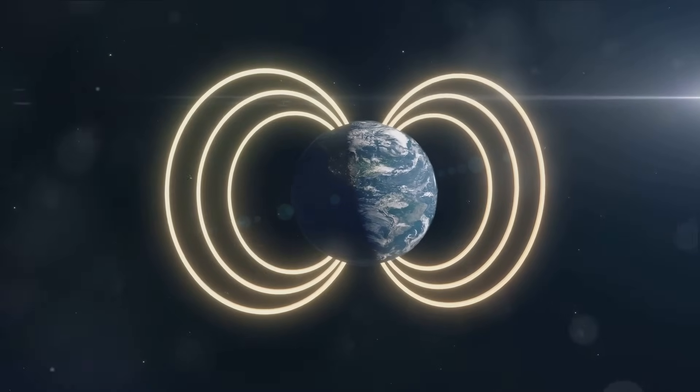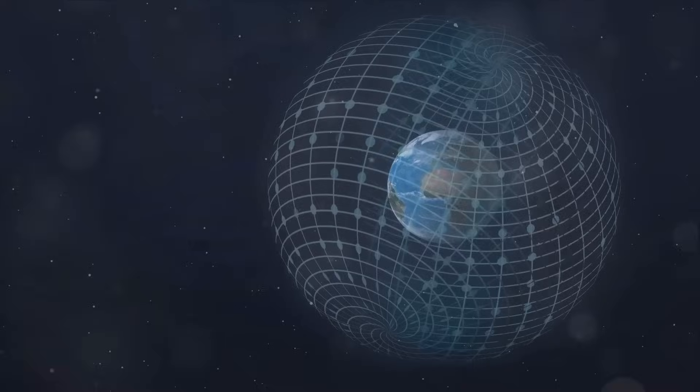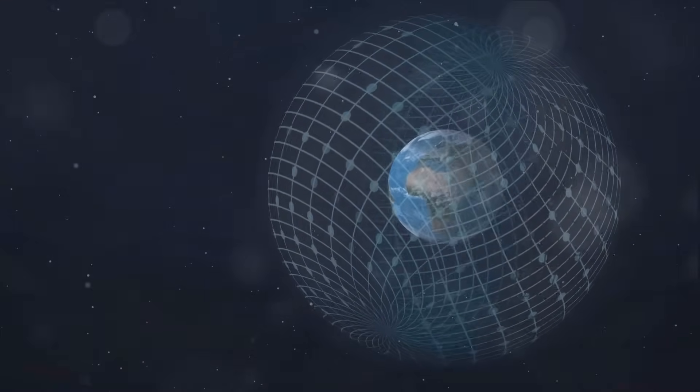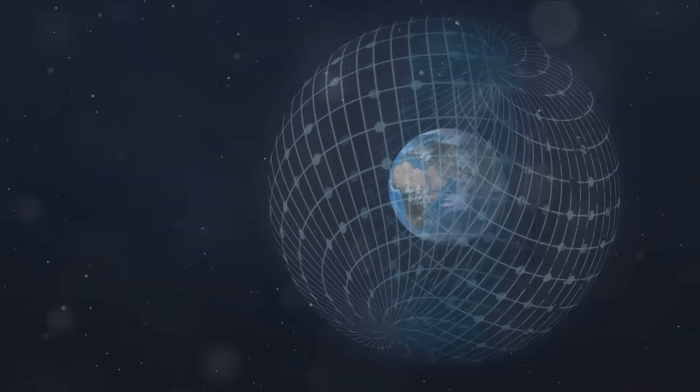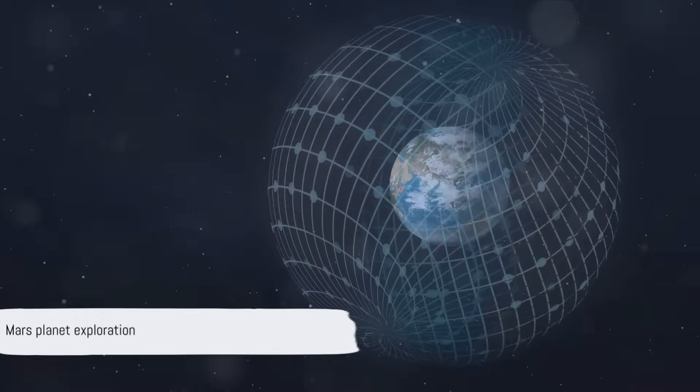And then there's Earth's magnetic field, our planet's invisible shield. Generated by the movement of molten iron within Earth's outer core, it protects us from solar winds and cosmic radiation, ensuring life can thrive. From the blue planet, now move on to the red one.